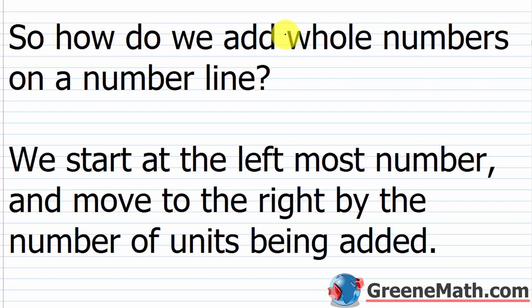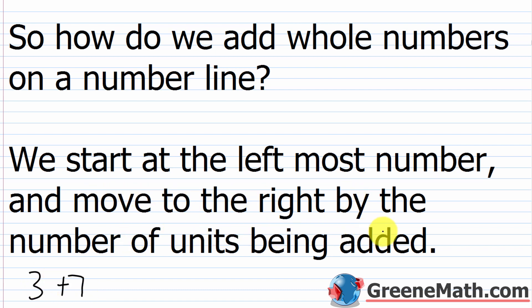So how do we add whole numbers on a number line? We start at the leftmost number. For example, if you had three plus seven, you would start out at three on the number line. And then you move to the right by the number of units being added. So we're adding seven to three, so we would just move to the right by seven units.